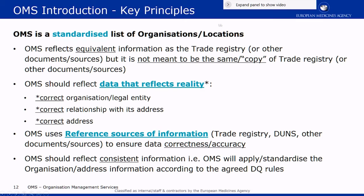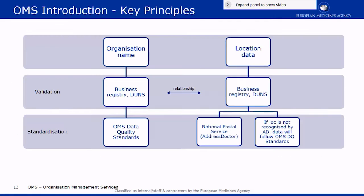In a nutshell, how do we do this? We've talked about change requests, documentation, standardization, and validation. Upon the registration of a new organization or creating only a location, there are two main steps: validation and standardization. First step being validation, where we use the documentation that you provide and validate against our sources.